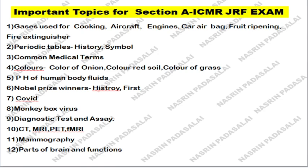Next, go through the common medical terms — you can refer to either textbooks or any medical website. Next, study colors: why onion is pink in color, what is the pigment responsible for that, why red soil is red in color, why the color of grass is green — you should know the reason behind these colors.